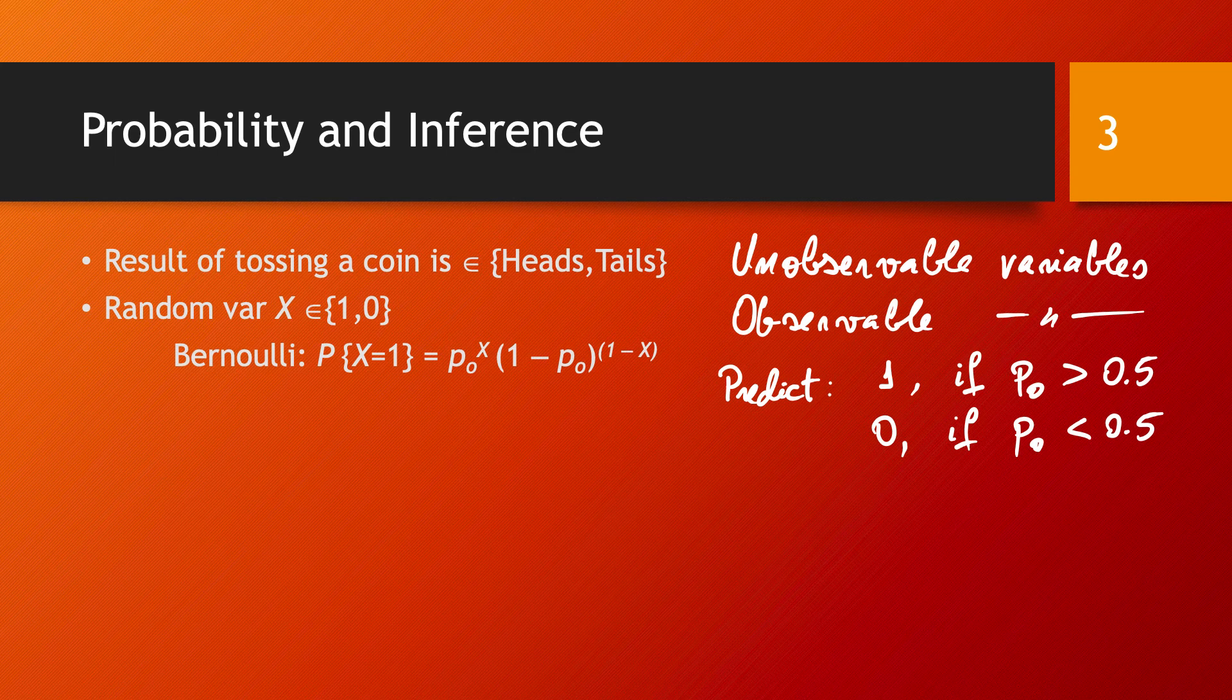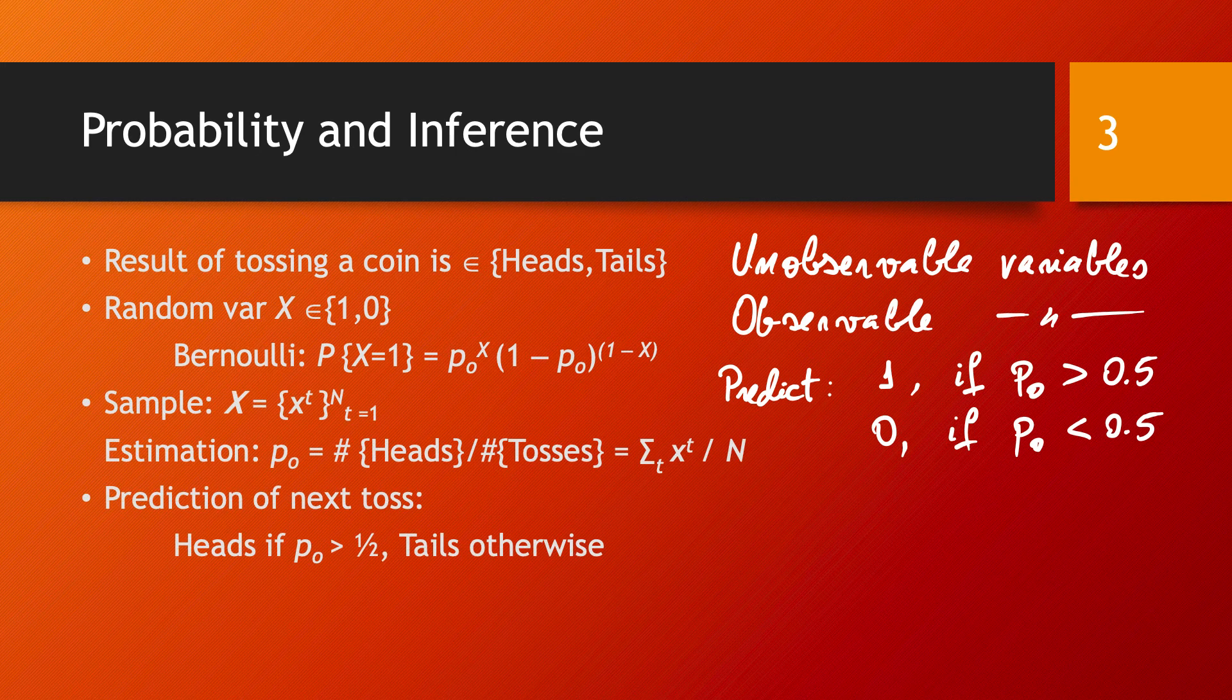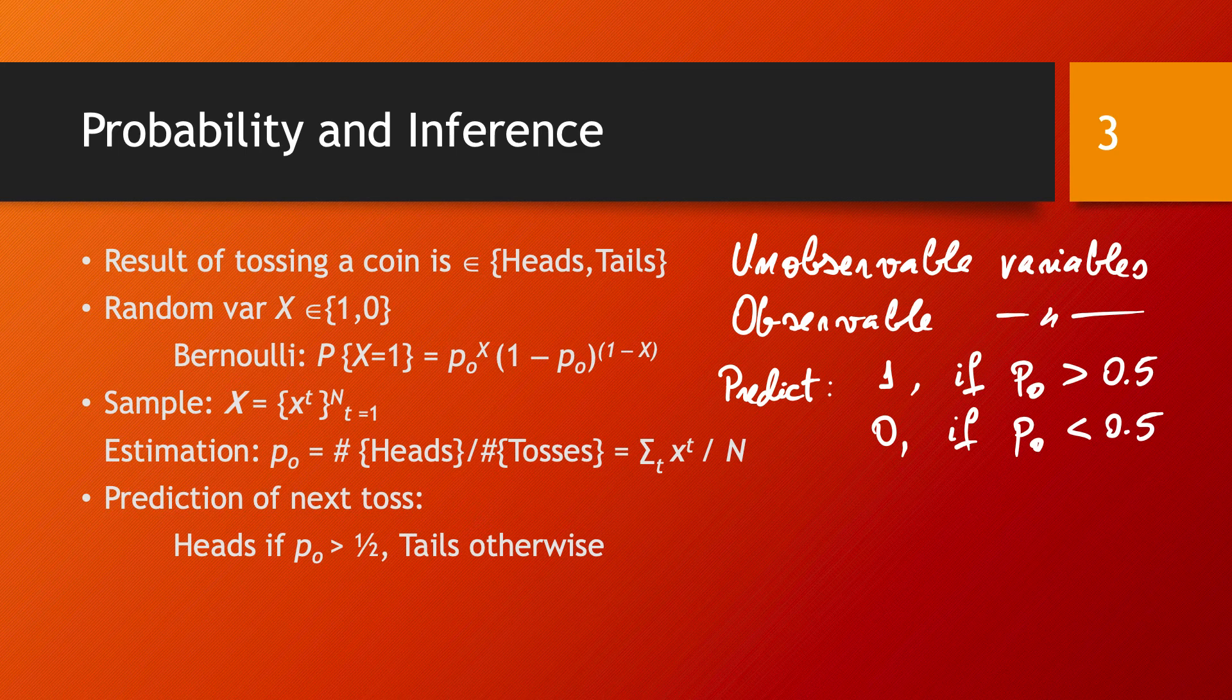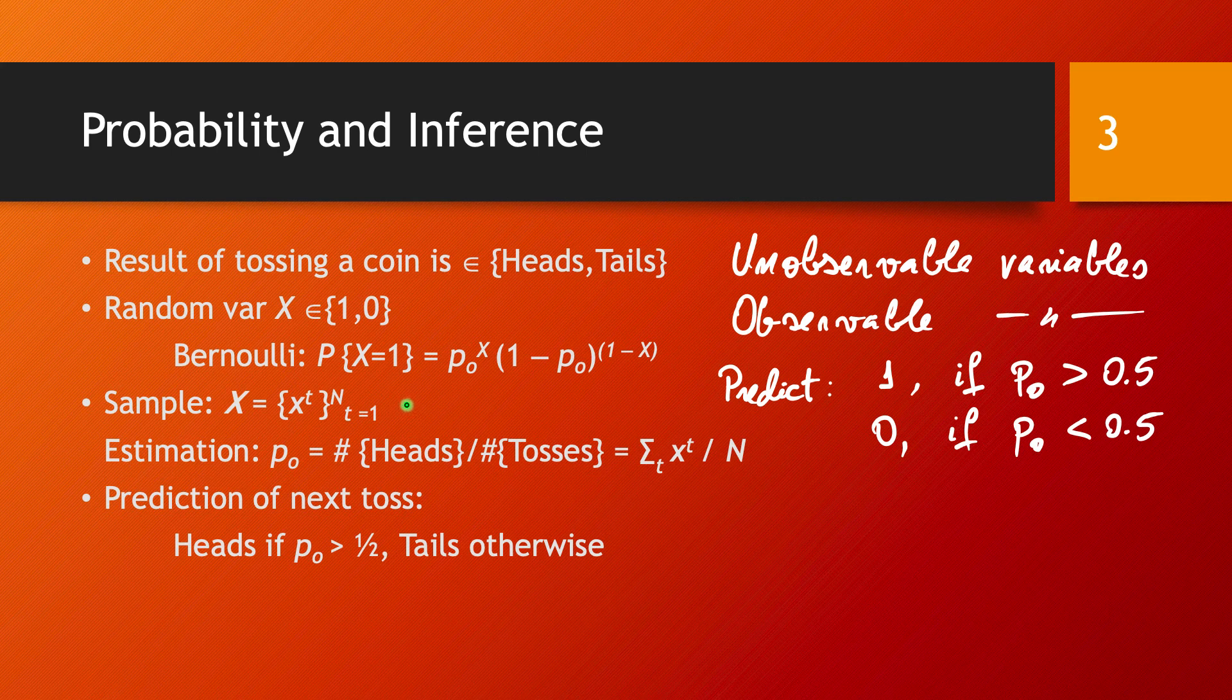But if we don't know the probability P0, then we can take a sample of outcomes of our random process. That means we have a number of observations—in our case, n observations, so we have xt with t from 1 to n.